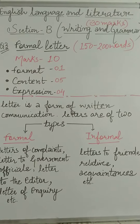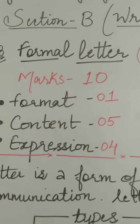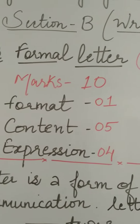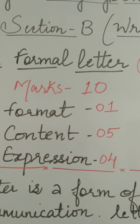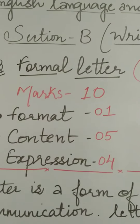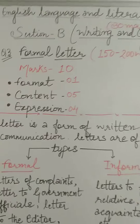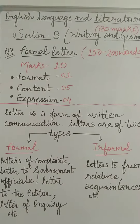Today we are going to start with the second section, that is Section B: Writing and Grammar. Marks allotted to this section is 30 marks. The section will begin with the third question, that is the formal letter. The previous two questions would be from the reading section, and then the third question beginning with the formal letter. Word limit is 150 to 200 words, and marks allotted are 10 marks.